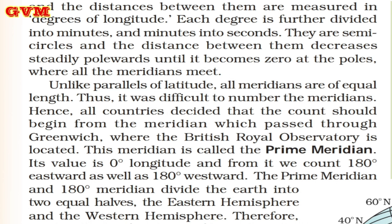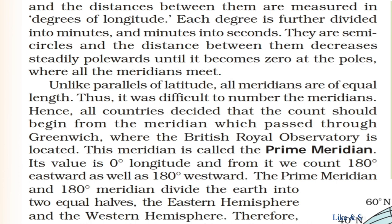This meridian is called the Prime Meridian. Its value is 0 degrees longitude, and from it we count 180 degrees eastward as well as 180 degrees westward.